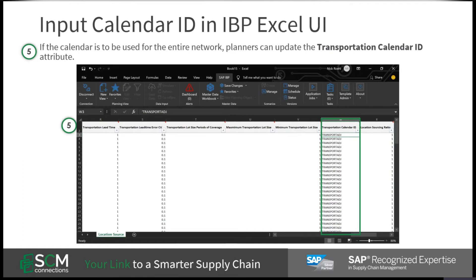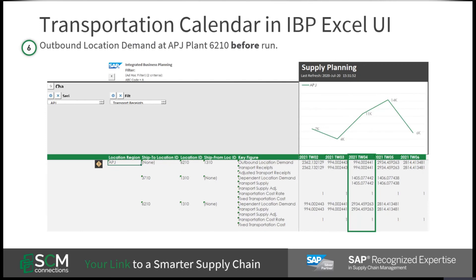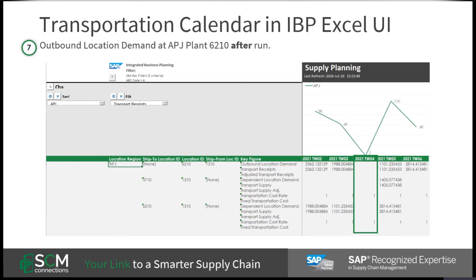Once in the planning view, you can see the period in question — technical week 04 at location 6210 — has a total outbound location demand of 11,000 units. After the optimizers ran with the updated calendar, we should see no demand in technical week 04 and increased demand in weeks 02 and 03. The calendar has pulled the demand forward to help get around the non-working week 04.